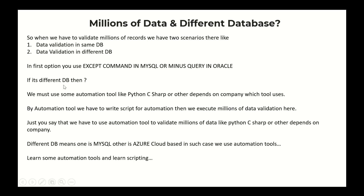If it's a different DB, then we must use some automation tools like Python, C-Sharp, or other tools — depending on which tool the company uses. By automation tool, we write scripts for automation and then execute millions of data validation.